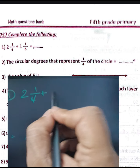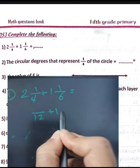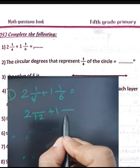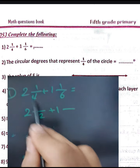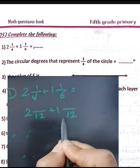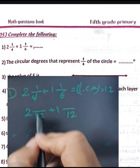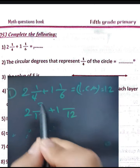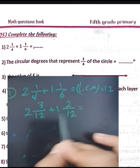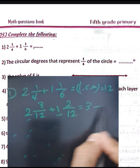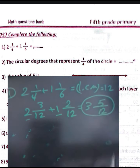Complete the following, number one: two and one-fourth plus one and one-sixth. Find the least common multiple of 4 and 6, which is 12. Convert: 4 times 3 equals 12, so multiply numerator by 3: 1 times 3 equals 3, giving three-twelfths. For sixths: 2 times 6 equals 12, so 1 times 2 equals 2, giving two-twelfths. Add whole numbers: 2 plus 1 equals 3, and fractions: 3 plus 2 equals 5. Result is three and five-twelfths.